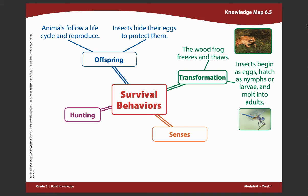The last thing that we are going to write is that insects hide their eggs to protect them. Do you remember what Dahlia's mother told her? She said that she found long grass and poked holes in it where she hid all of the nymph eggs. That was to protect them from any predators or animals and insects that would have wanted to eat them. This is a special thing that adults do to protect their offspring. Take some time to write this last sentence on your knowledge map.